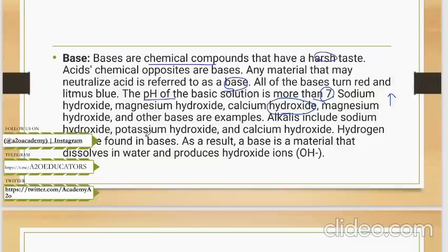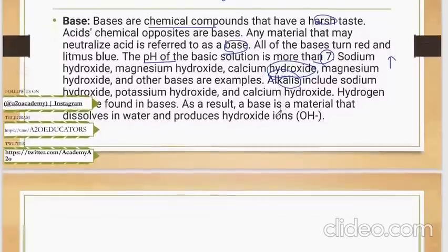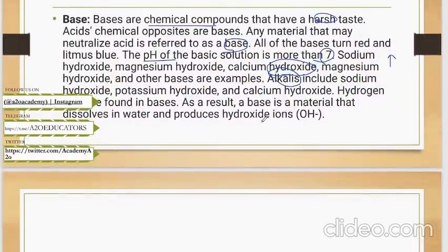Alkalis include sodium hydroxide, potassium hydroxide. We have done periodic tables. So we did the alkali metals. So all the bases formed by those alkali metals will be represented as alkali bases. A base is a material that dissolves in water and produces OH negative ions.